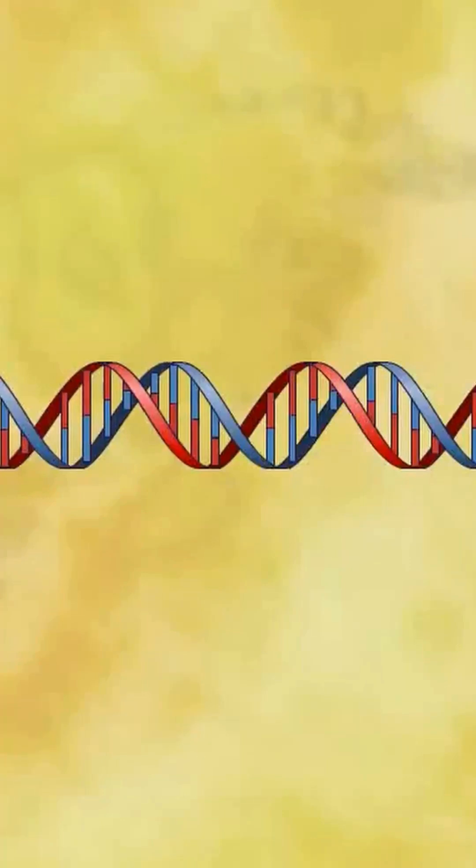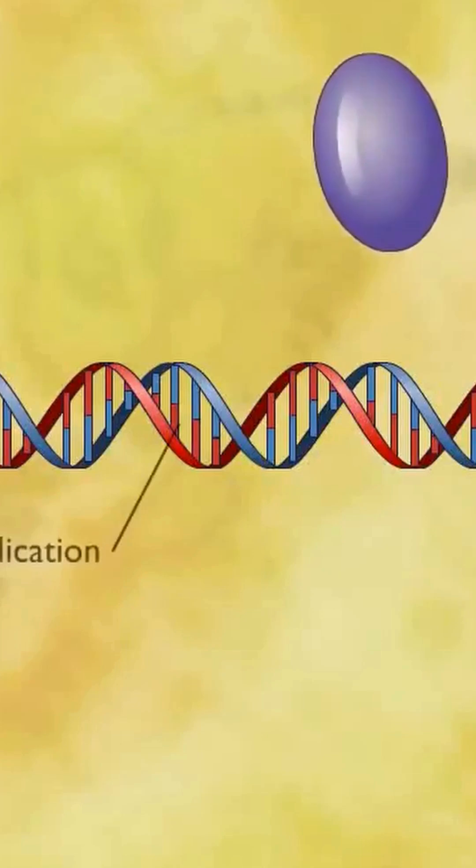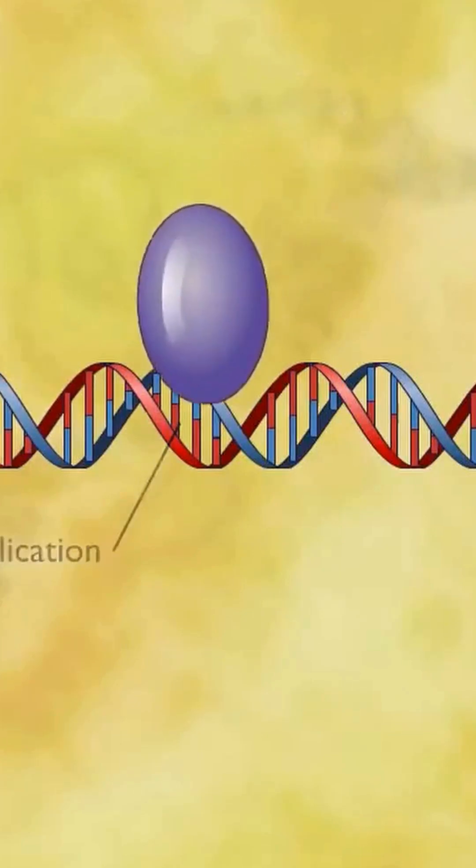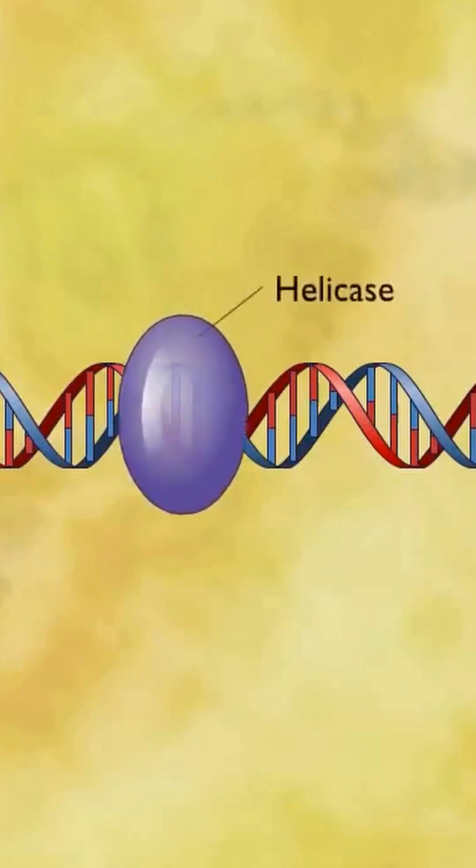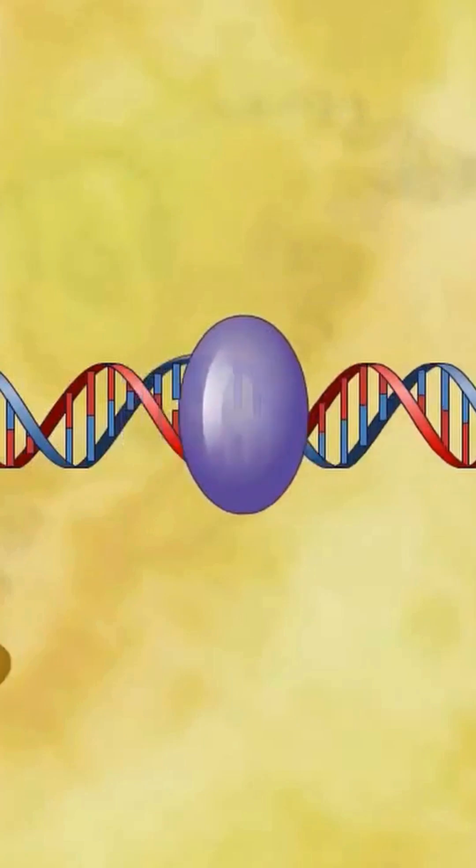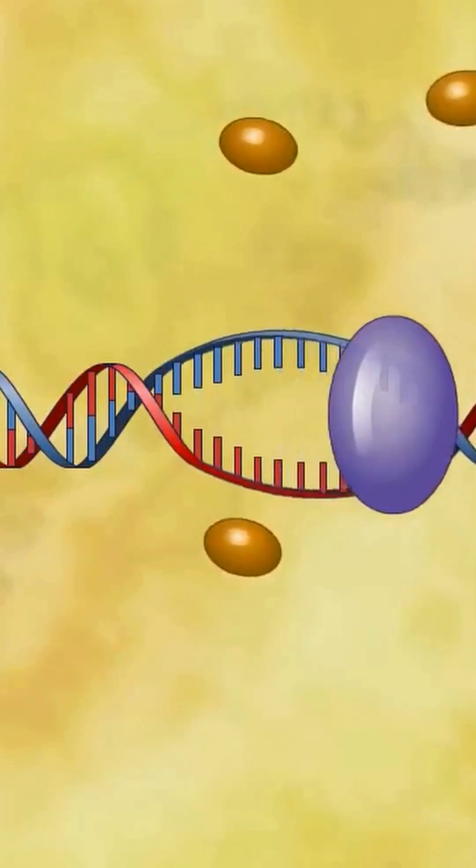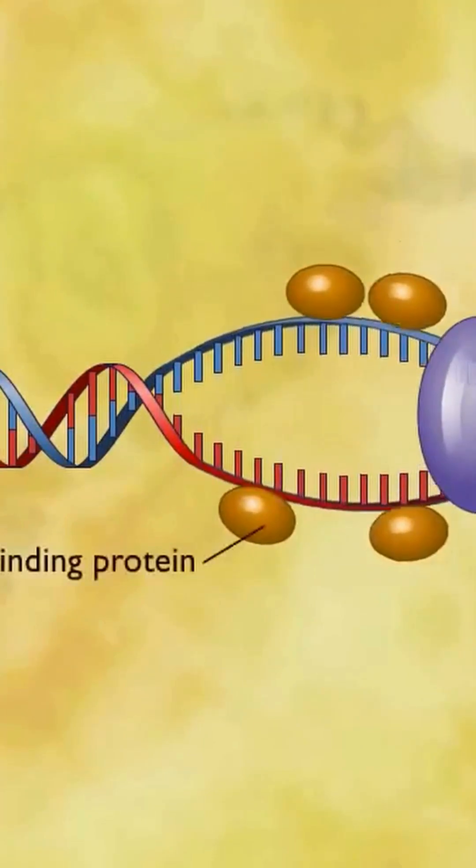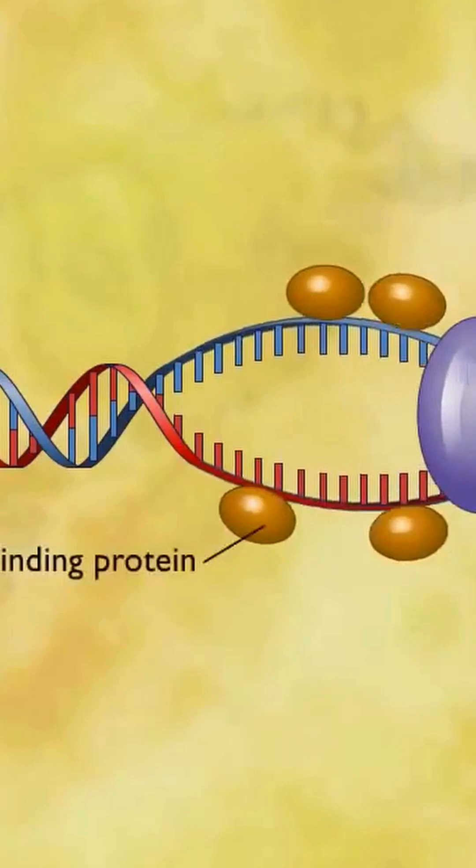The replication of DNA begins at a sequence of nucleotides called the origin of replication. Helicase unwinds the double-stranded DNA helix and single-strand binding proteins react with the single-stranded regions of the DNA and stabilize it.